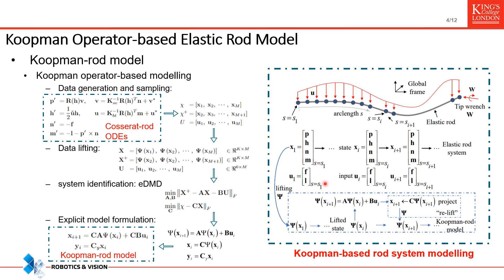Input vectors include external distributed force and moment. We simulate the Cosserat rod ODEs to obtain random trajectories and sample the state and input data. A set of lifting functions are selected to lift the sampled states. Extended dynamic mode decomposition is used to identify system matrices A, B, and C. A linear model can be formulated with these matrices, but in order to maintain high prediction accuracy across multiple steps, an additional projection re-lift operation is applied at every prediction step, leading to a nonlinear discrete recurrence model.